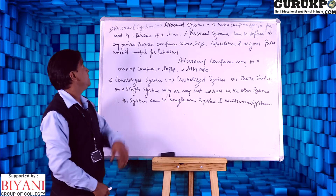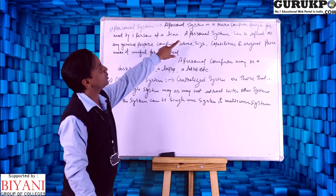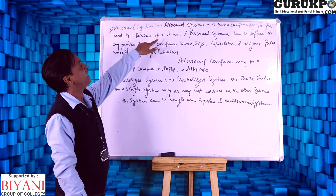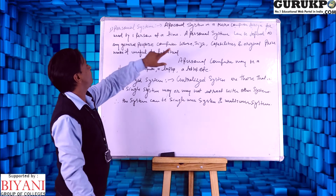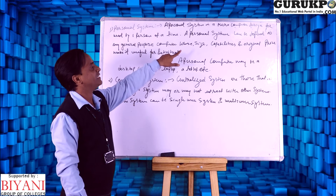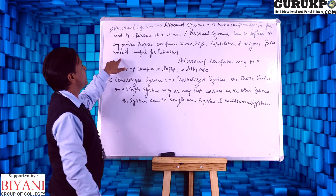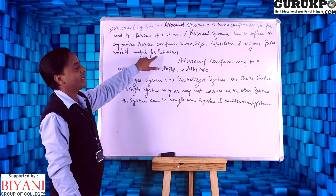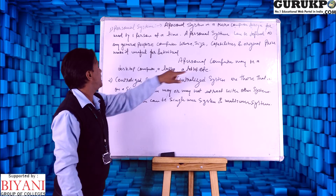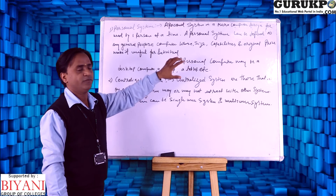First of all, we will discuss the personal system. A personal system is a microcomputer designed for use by one person at a time. It can be defined as any general-purpose computer whose size, capability, or original price makes it useful for individuals. A personal computer may be a desktop computer, a laptop, a tablet, etc.